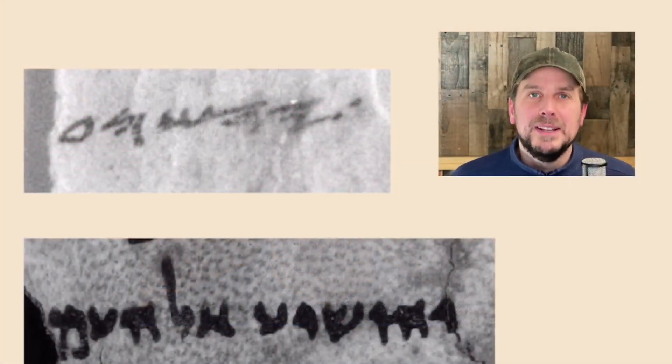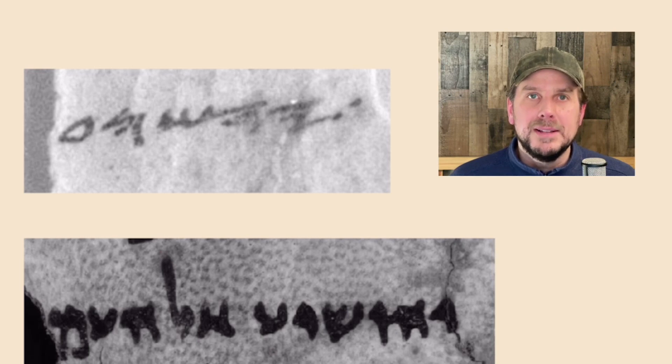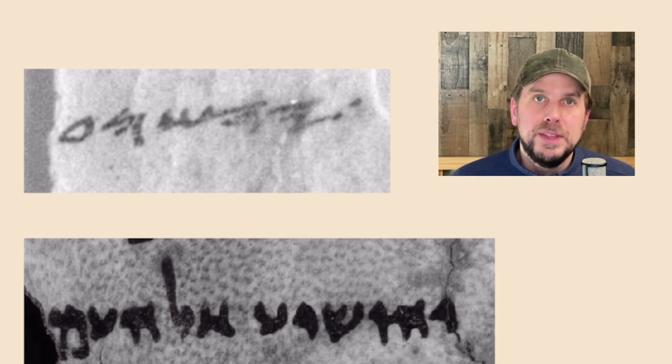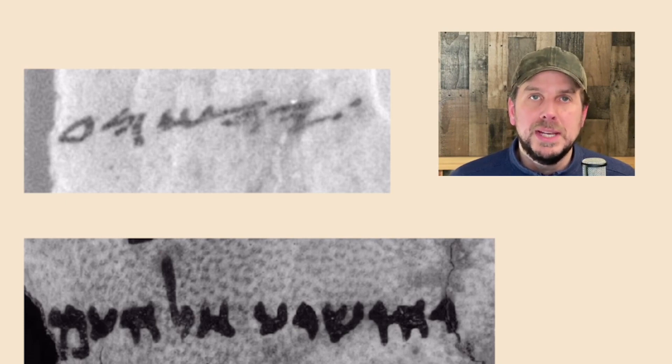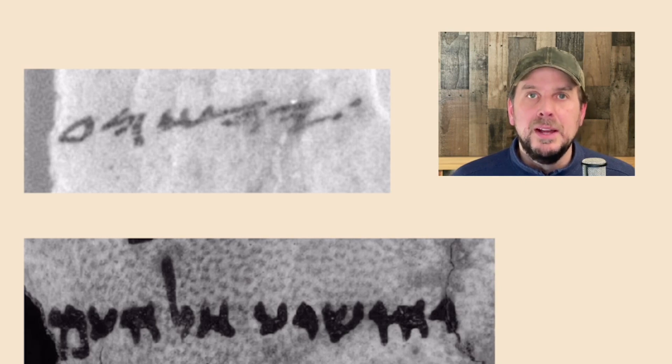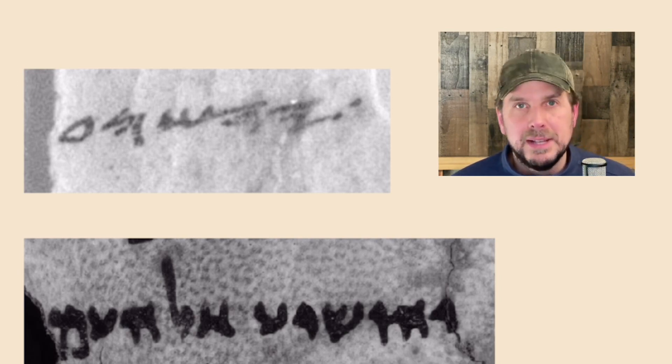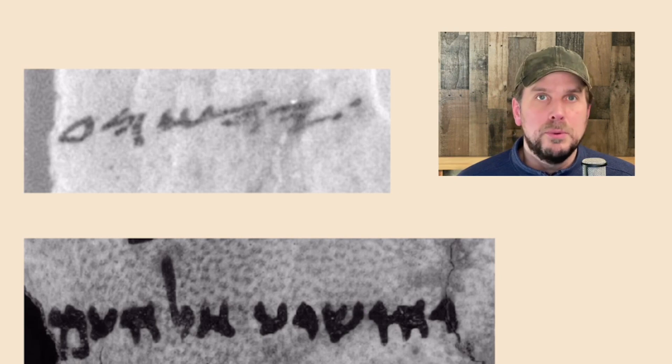What I want to show you today is a variety of ancient Jewish texts, all of which feature the name Yehoshua, translated as Joshua, son of Nun. All the images you see here are taken from ancient manuscripts, and they're all referring to the same historical figure, Joshua, son of Nun. The first is taken from a manuscript from Qumran from the Hasmonean period.